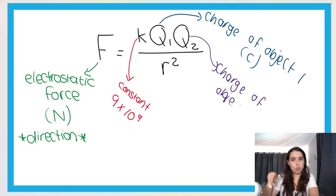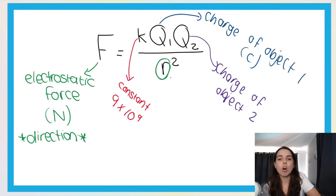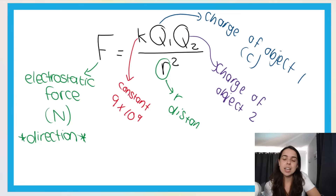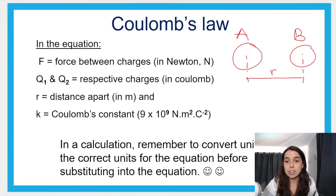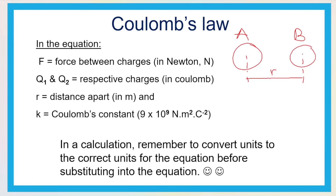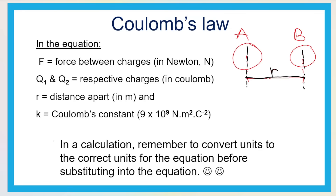Q2 is the charge of object 2 — remember there are two objects. R is the distance between the centers; it's not just any distance, it's specifically the distance between the centers of the objects. Take the center of object one, take the center of object two — the distance between those centers is R. R must be measured in meters. If it's given in centimeters or millimeters, you must convert. This is super important in order to use the formula correctly, so please do the correct conversions before using the formula.